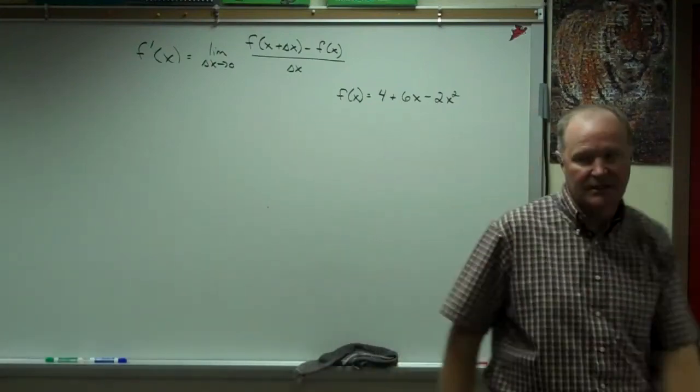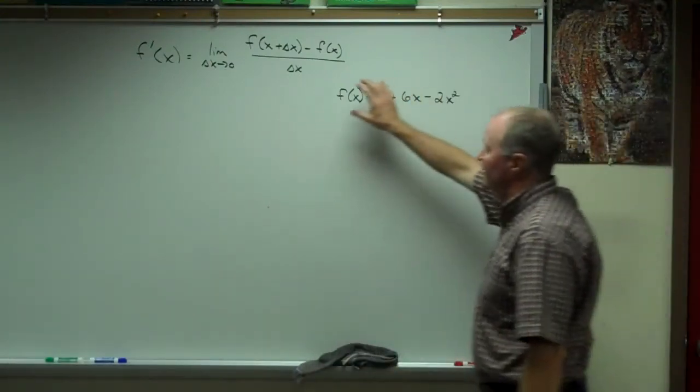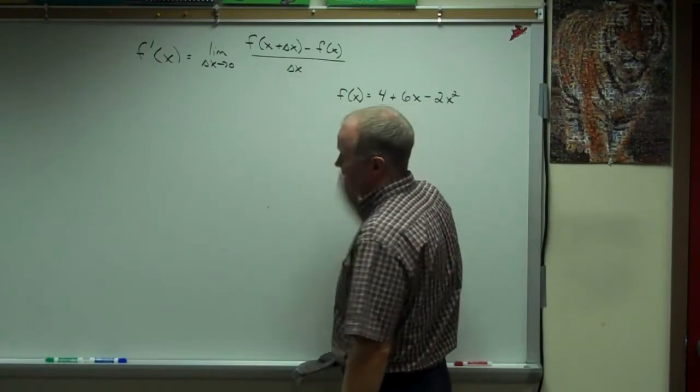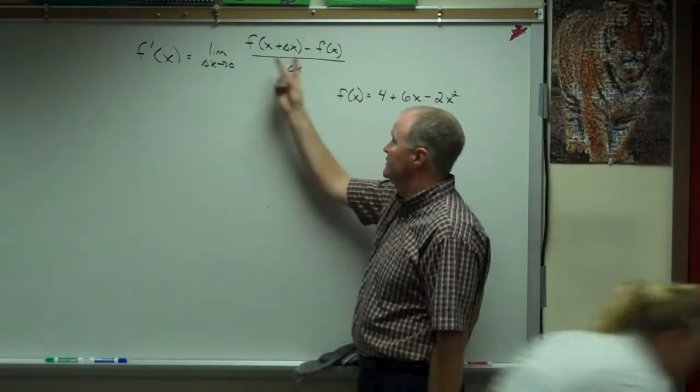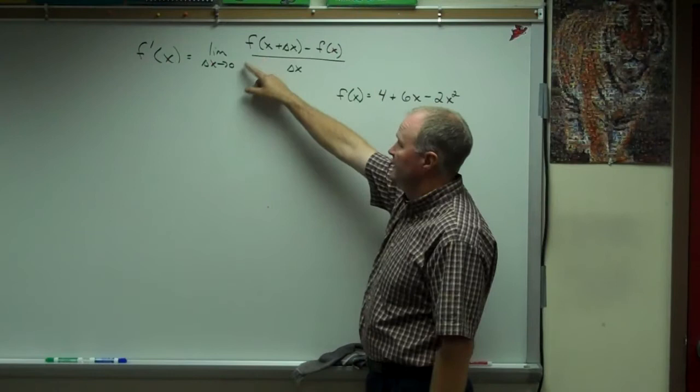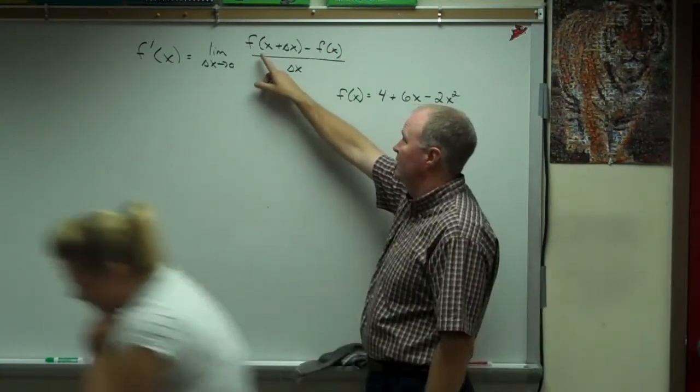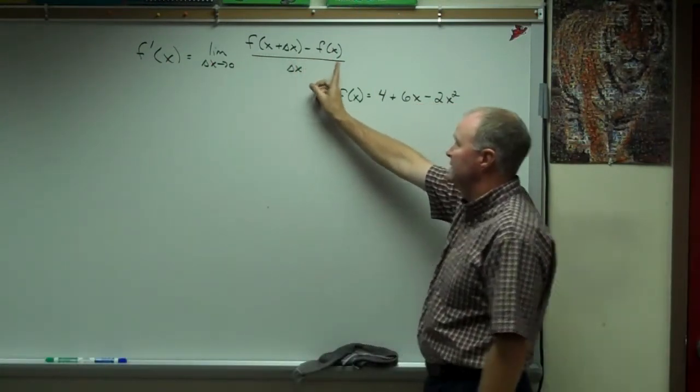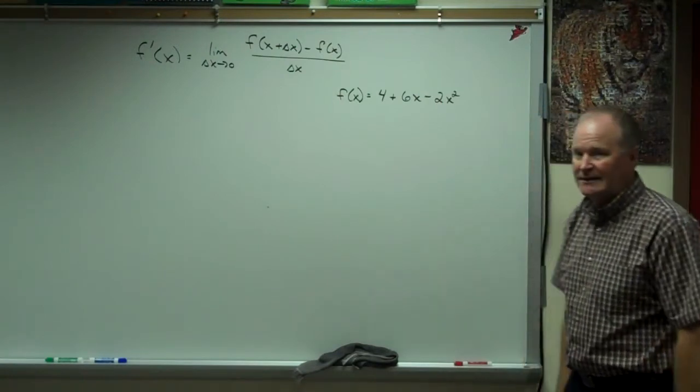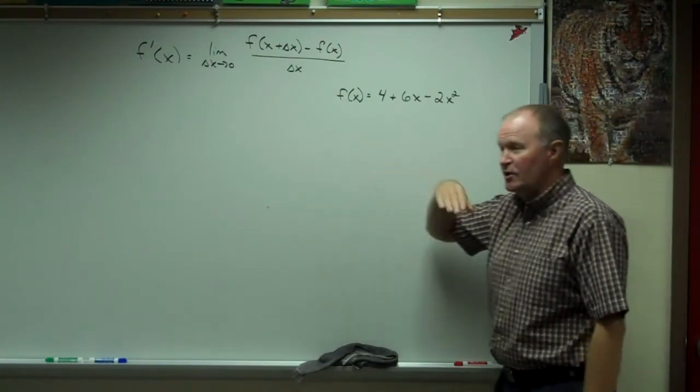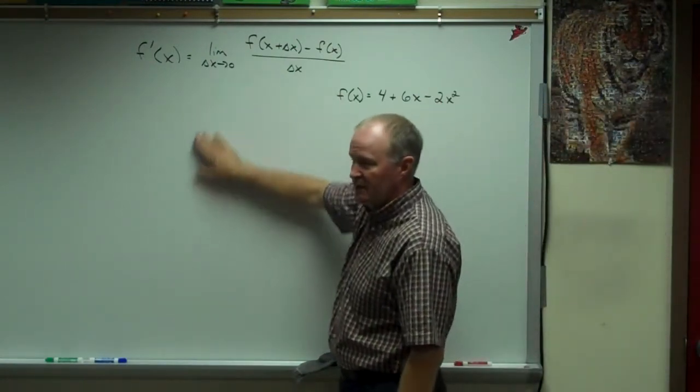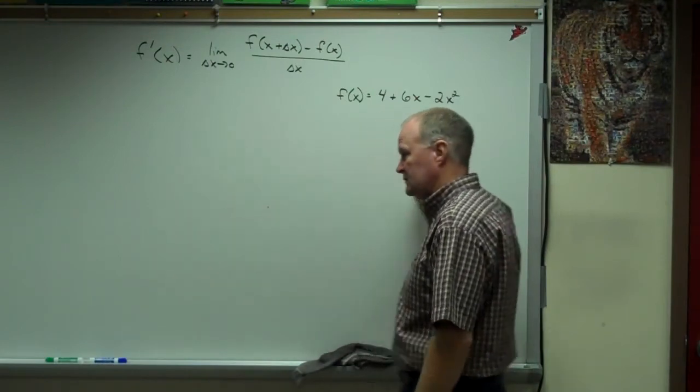Finding the derivative using the limit definition, you must use the formula, which is the slope. The limit as delta x goes to zero of f of x plus delta x minus f of x divided by delta x. Remember when you're doing this, you're going to have to keep the limit thing along until you do that.